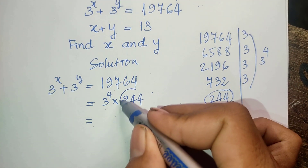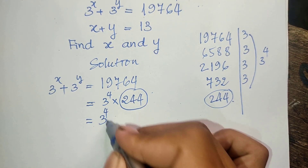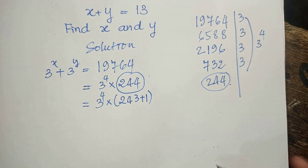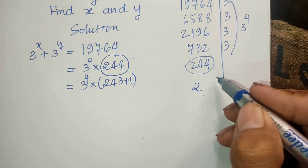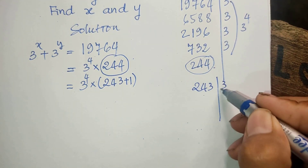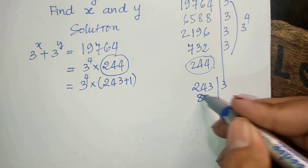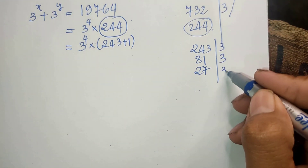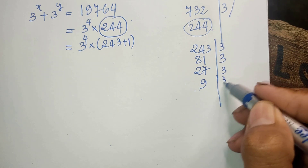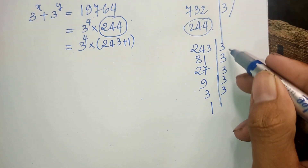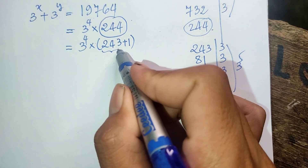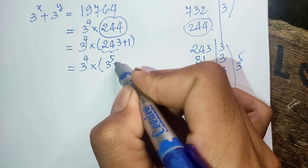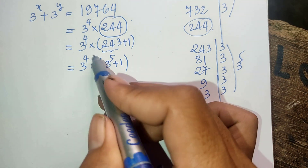Now 244 I can write as 243 plus 1. And 243 we can divide by 3 to get 81, divide by 3 to get 27, divide by 3 to get 9, divide by 3 to get 3, divide by 3 to get 1. So 243 equals 3 to the power 5. We write this as 3 to the power 4 times (3 to the power 5 plus 1).